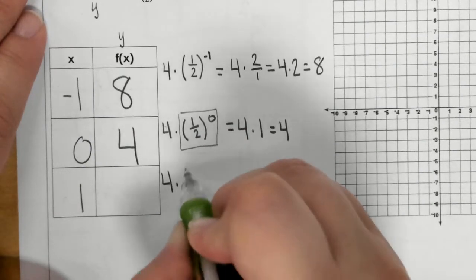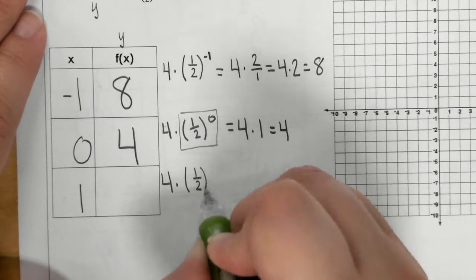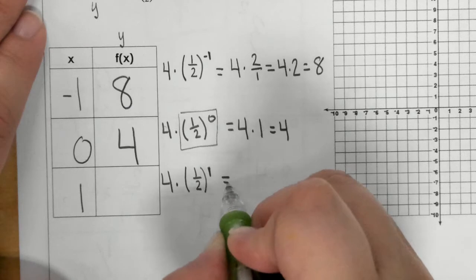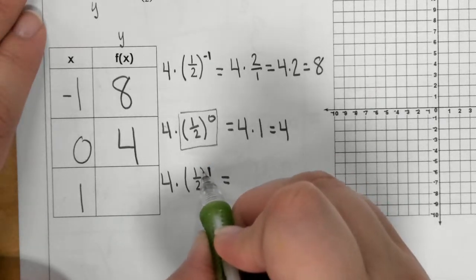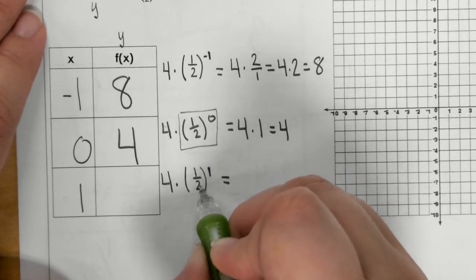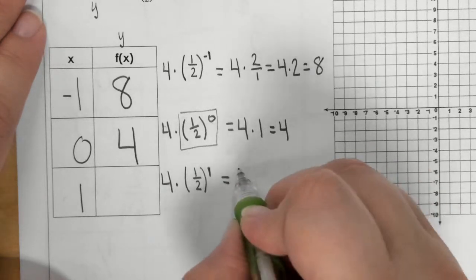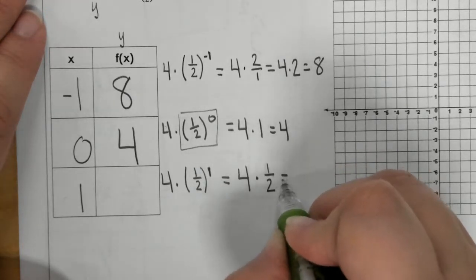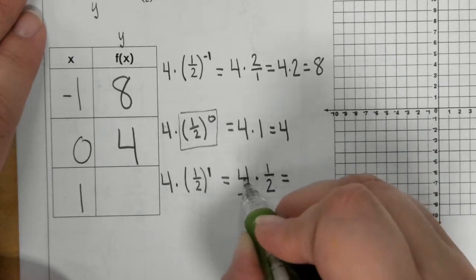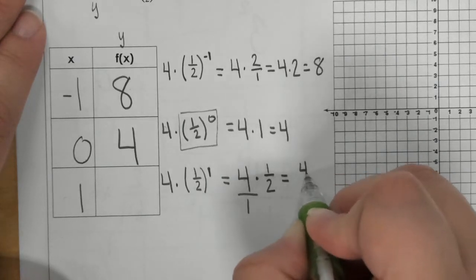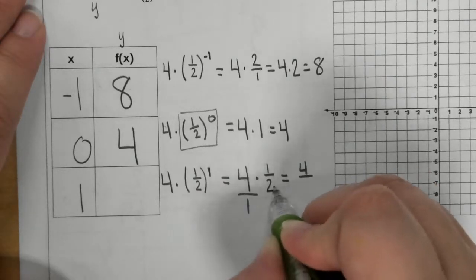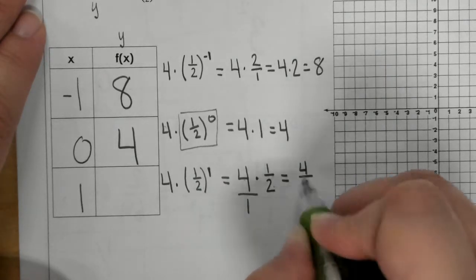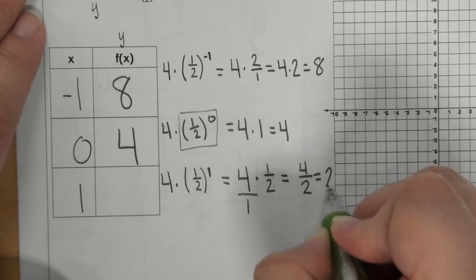And then we have 4 times 1 half to the 1st power. Well, the 1st power, you are saying 1 to the 1st and 2 to the 1st, that is just 1 half. Now we have to simplify that. So this is really over 1, so 4 times 1 is 4, and 1 times 2 is 2. And 4 divided by 2 is 2.